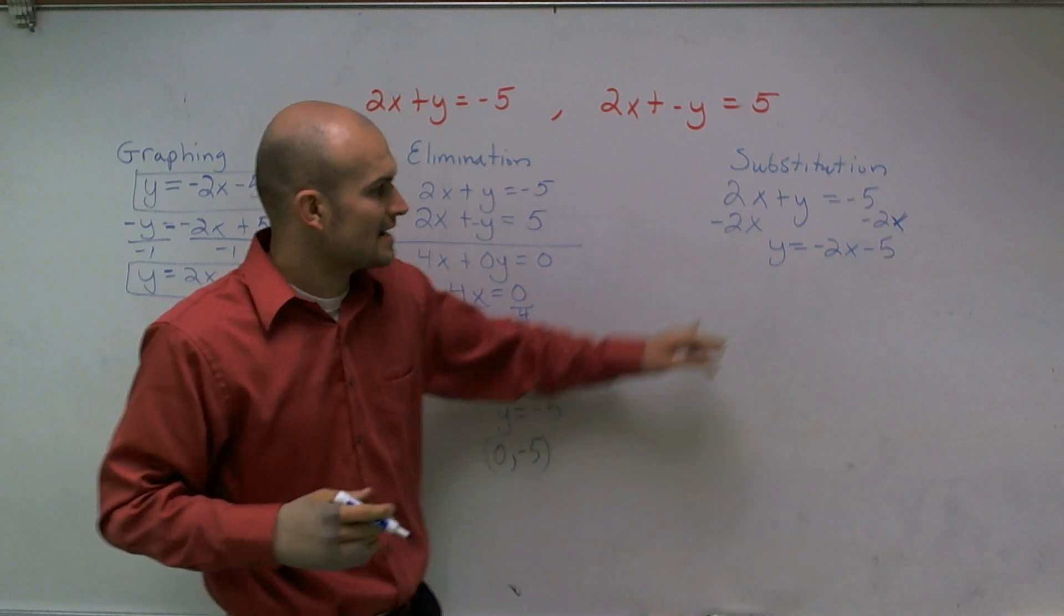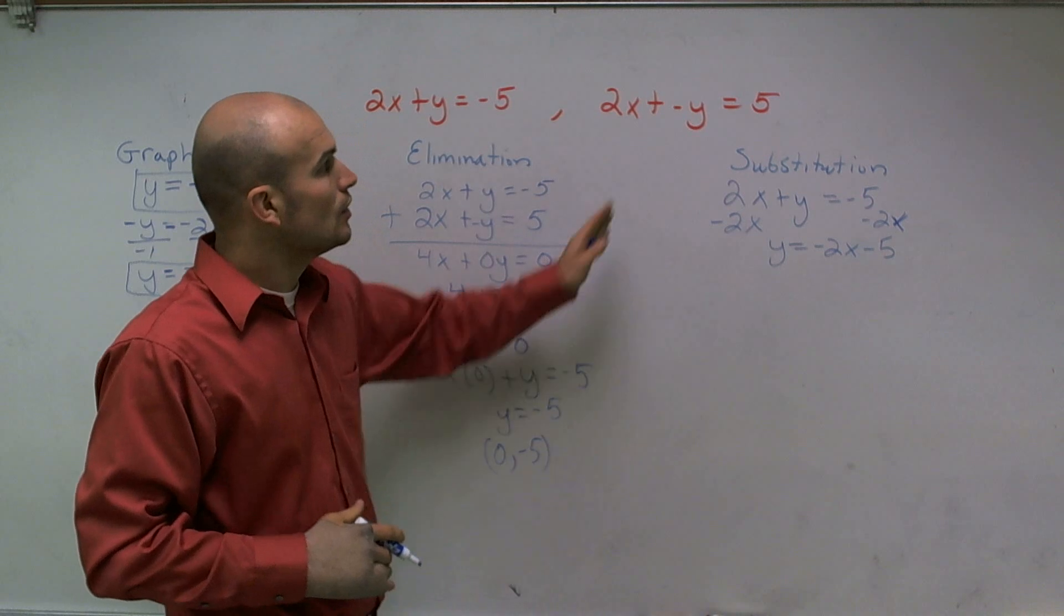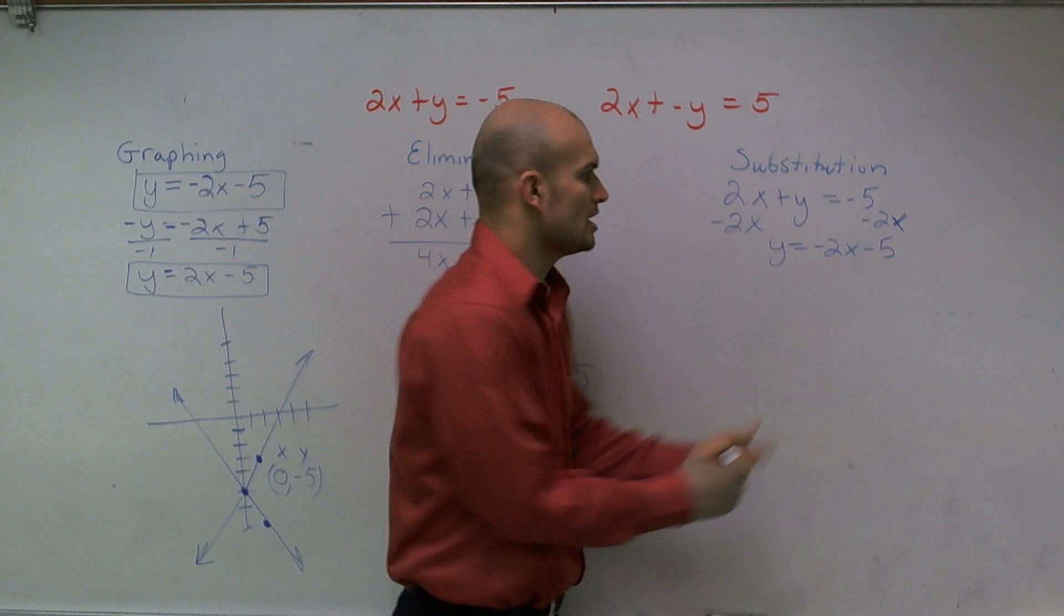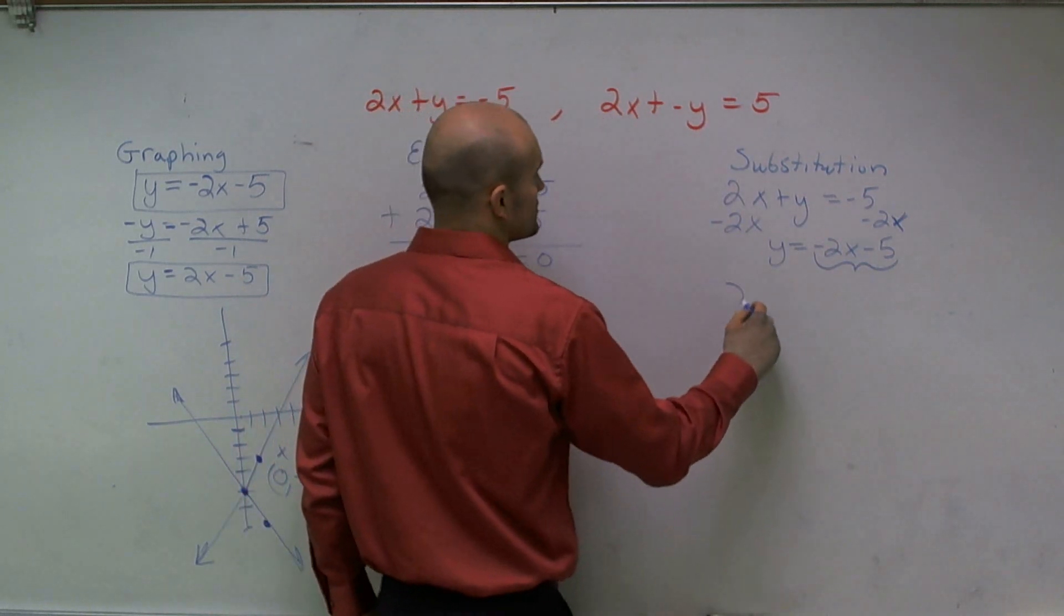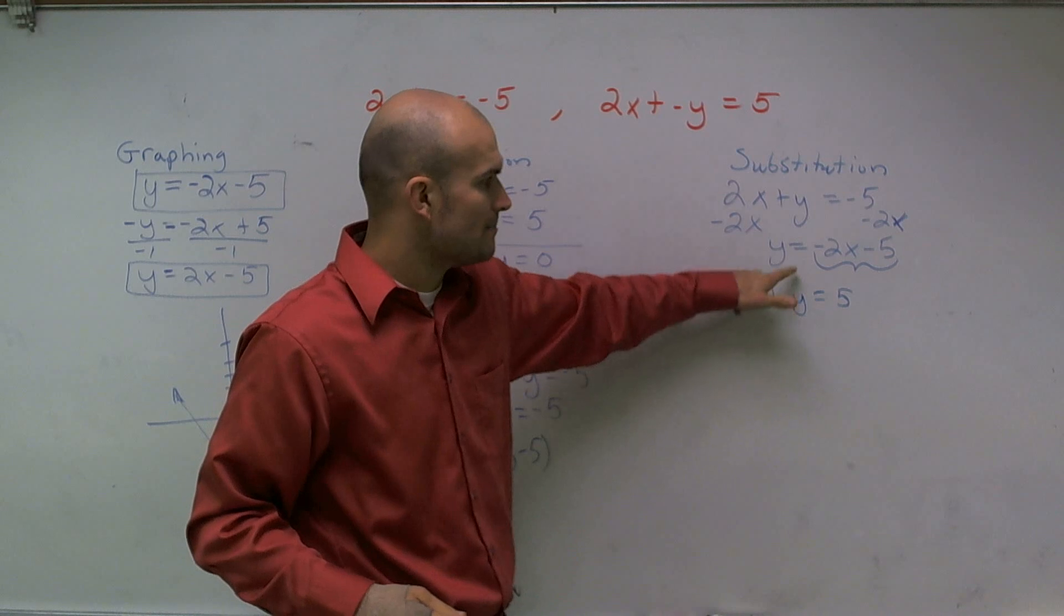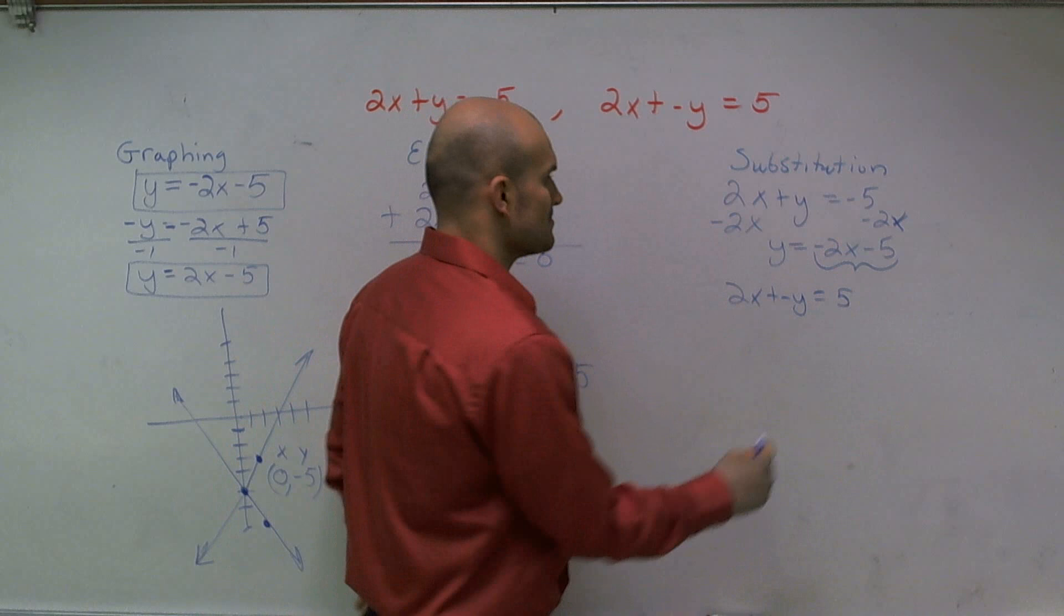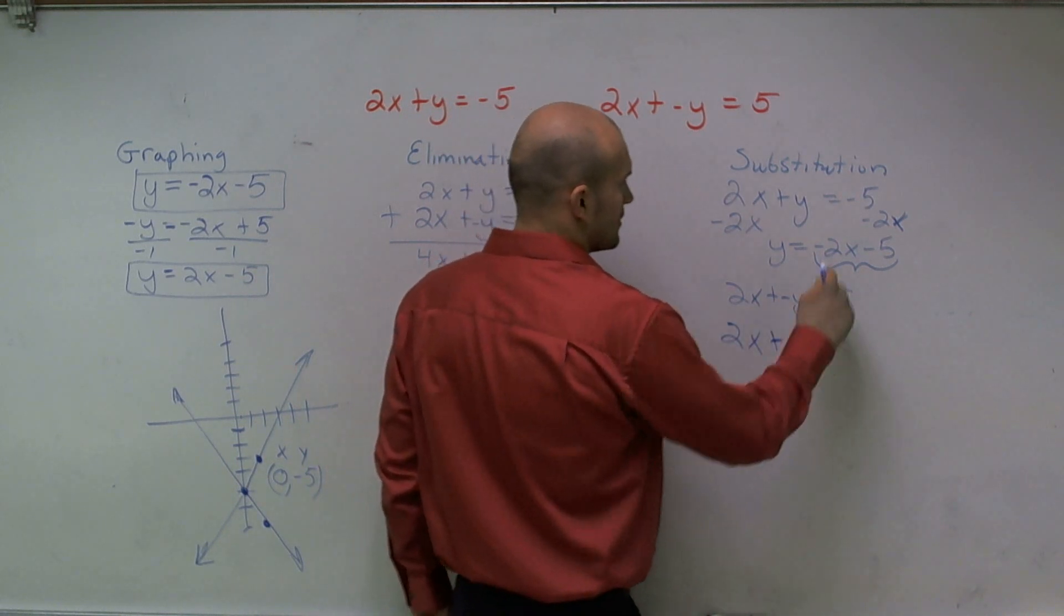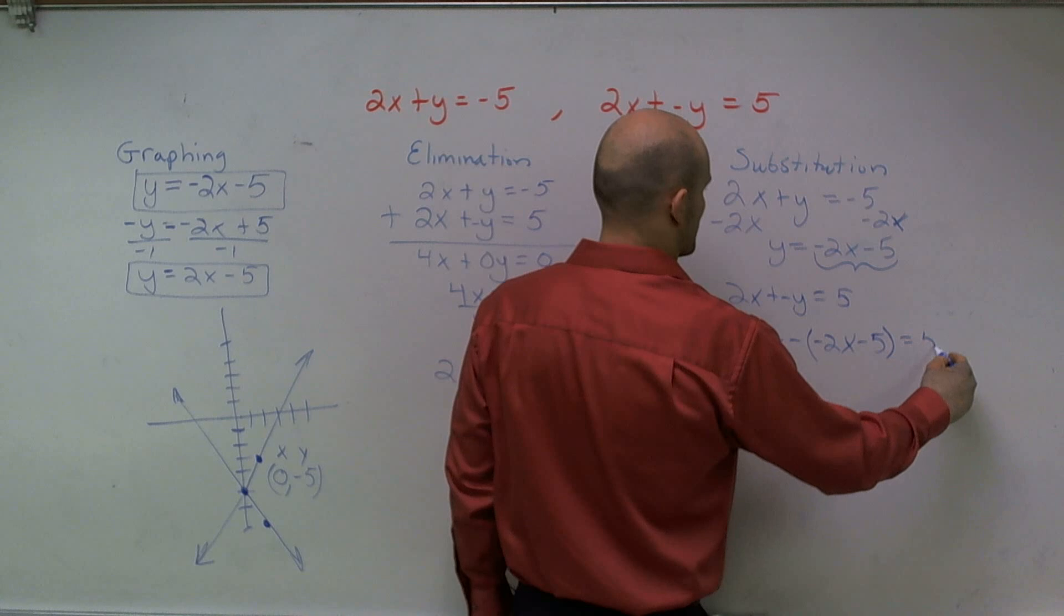So therefore, I can technically now say I know what y's value is. y is equal to a negative 2x minus 5. So what I'm going to do is, since y is equal to this value, I can plug this in to my other equation. So the other equation was 2x plus a negative y equals 5. Well, rather than writing y, I'm now going to write what the value of y was, which I rewrote, is negative 2x minus 5. So I write 2x plus a negative negative 2x minus 5. And that equals 5.